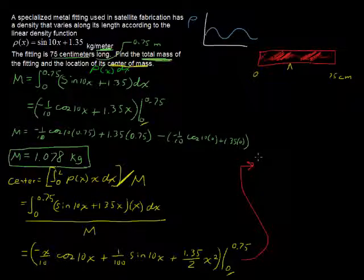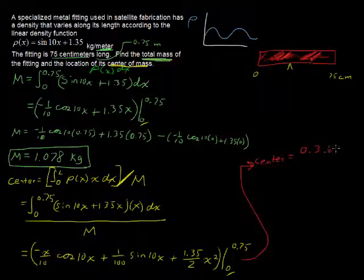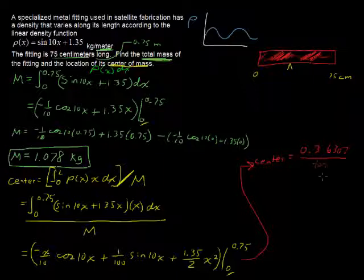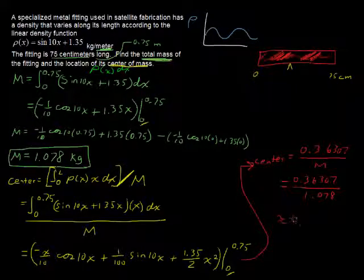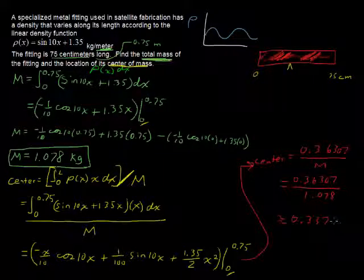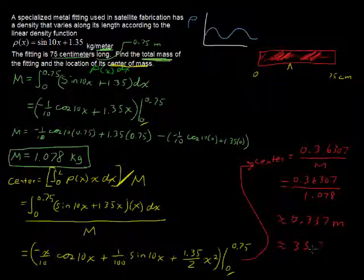The answer there is just this integral divided by m. The center equals 0.36307 divided by the m, so that is 0.36307 divided by the 1.078. And that comes to a center of mass at 0.337 meters. We're doing all in meters here. Well, let's bring that to centimeters. 33.7 centimeters.